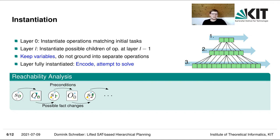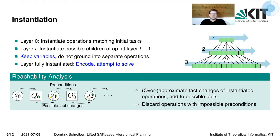The set of operations O0 influences the next possible world states S1, because they have effects — either directly if they are actions, or indirect effects induced by their transitive children. We use this chain of dependency as follows: if we instantiate an operation, we over-approximate the fact changes it may induce and add these fact changes to our set of possible facts. At a subsequent position, we can then discard all operations which have preconditions that are impossible with respect to the current set of possible states.